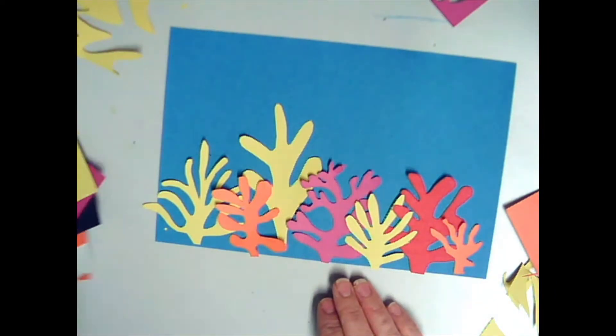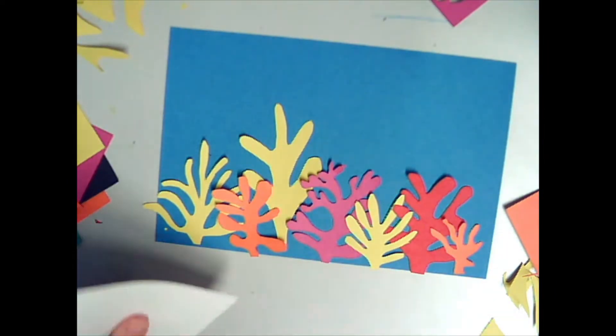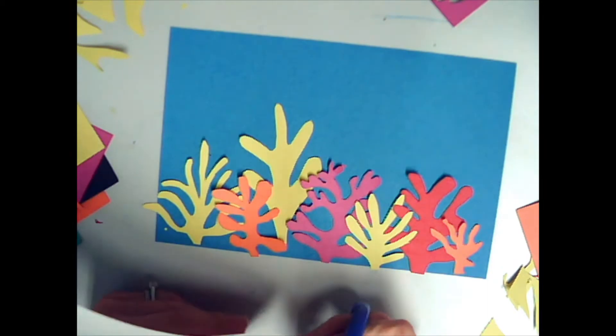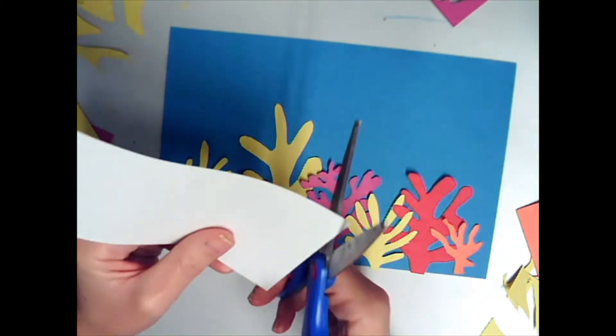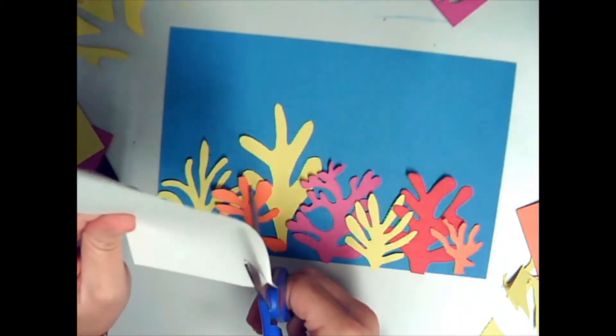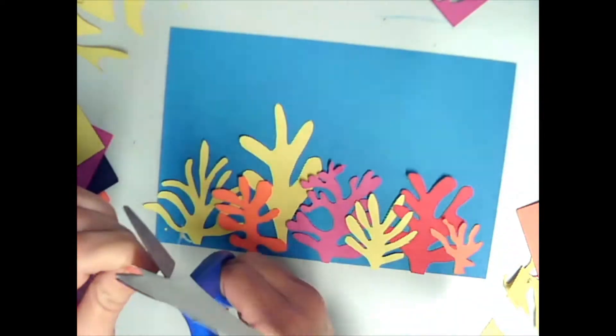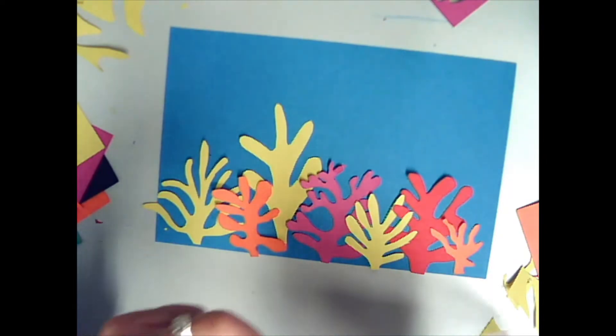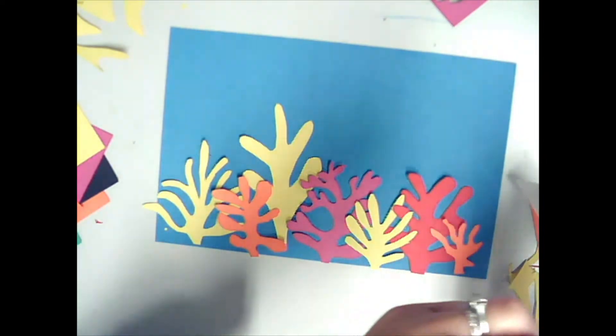So I've got my coral done. And I think also in the background I want to put a few bubbles. And then I'm going to make my fish. Now, obviously, in Matisse's goldfish painting, they were goldfish. But I'm just using that as inspiration. Inspiration means it's an idea, but we don't copy it.